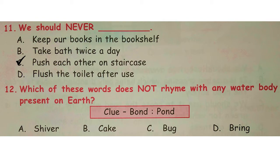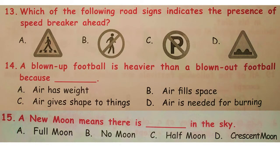Question number 12: which of these words does not rhyme with any water body present on earth? One clue given is 'born, pond'. The correct answer is option C — bug. Because other rhyming words are shiver/river, cake/lake, bring/spring.